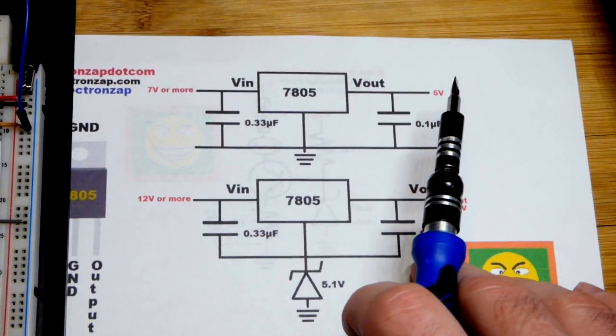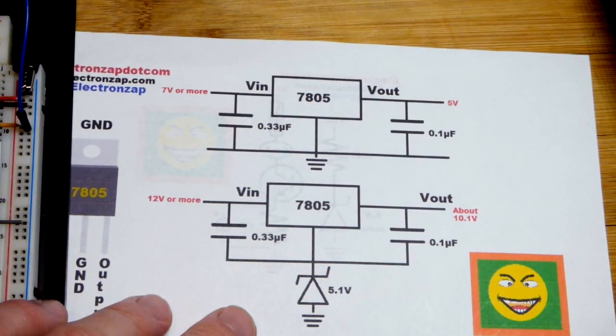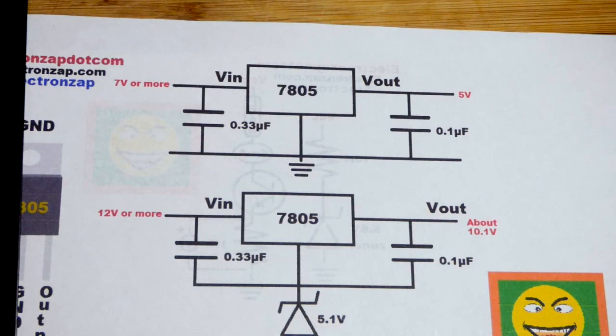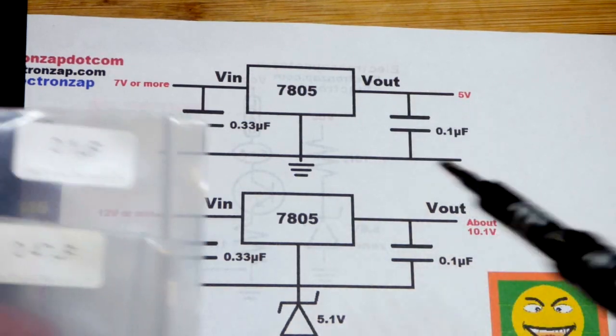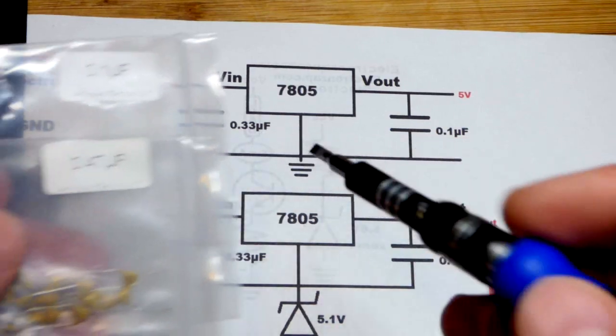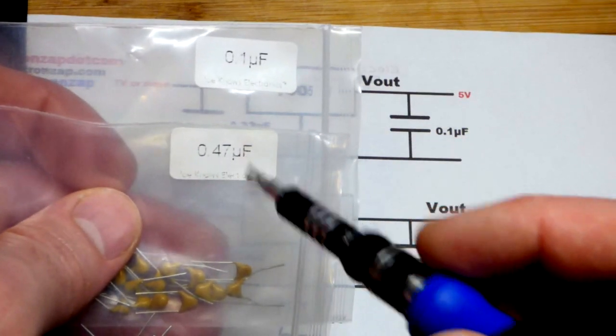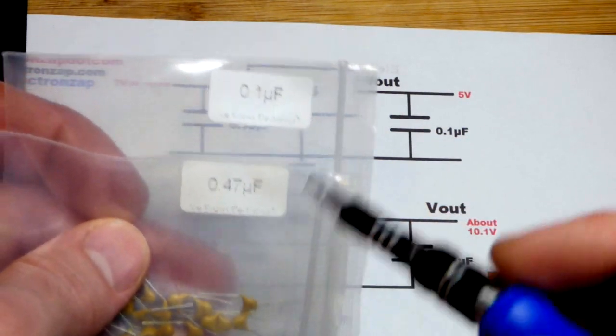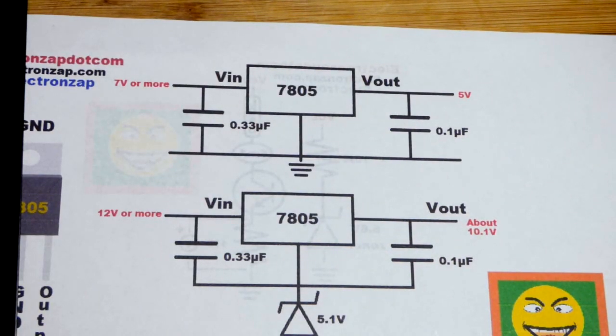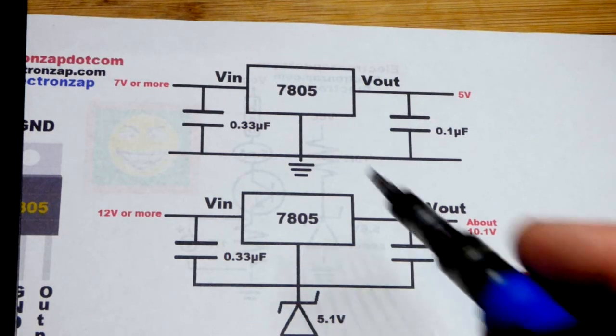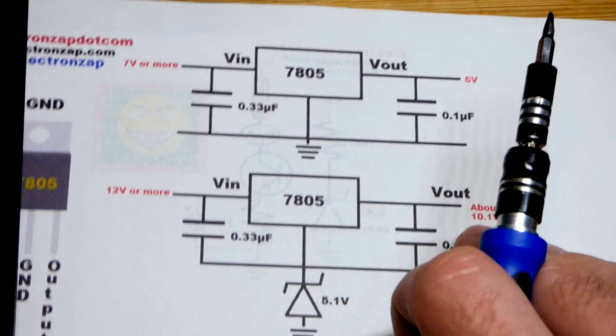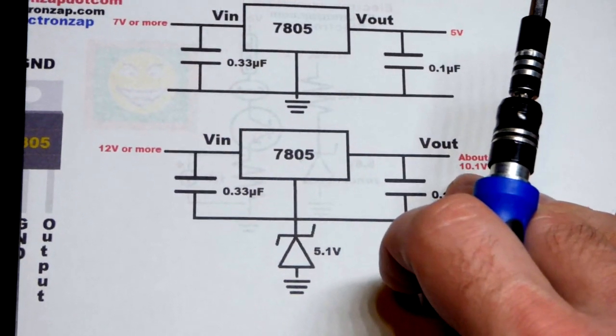Now the data sheet shows capacitors between the input pin, ground and also the output pin and ground. So instead of 0.33 microfarad because I don't have one, I have a 0.47 microfarad. I put it there and we got a 0.1 capacitor right there. You can probably get away without using the capacitors altogether but since they're on the data sheet I'm going to include them in there.